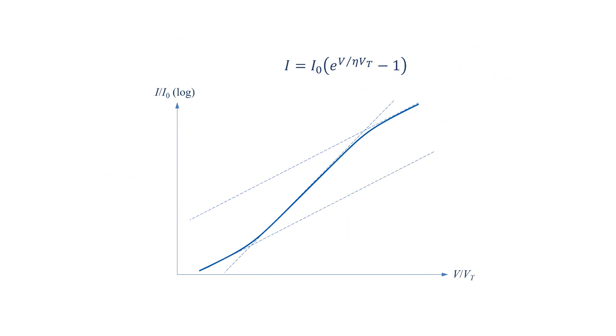This is the normalized plot of current in logarithmic scale versus normalized voltage. The slope of the curve is equal to 1 divided by eta. In the middle, which is the widest region, the slope is 1 corresponding to eta equal to 1.